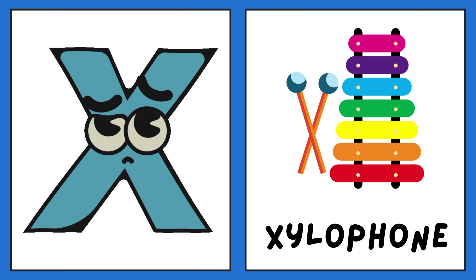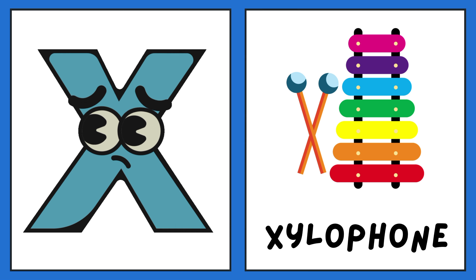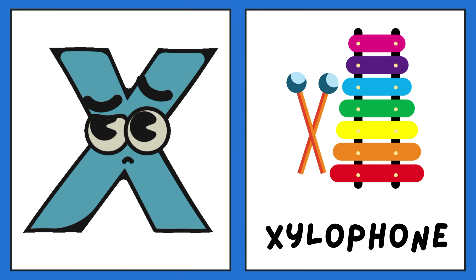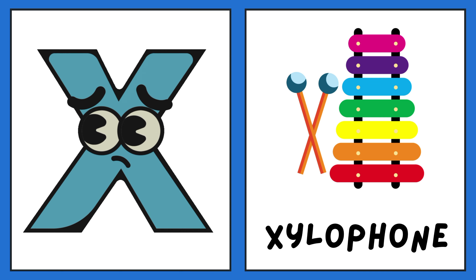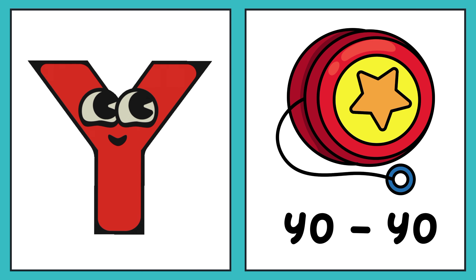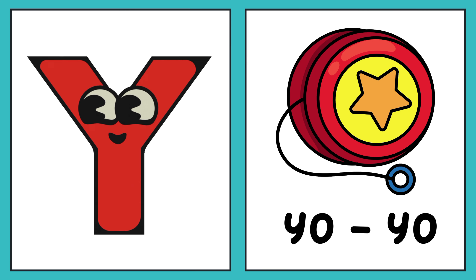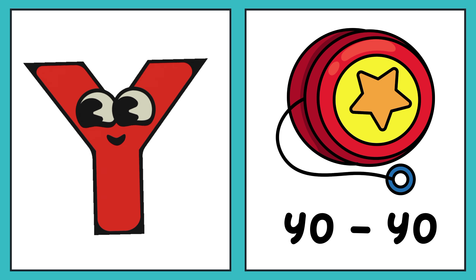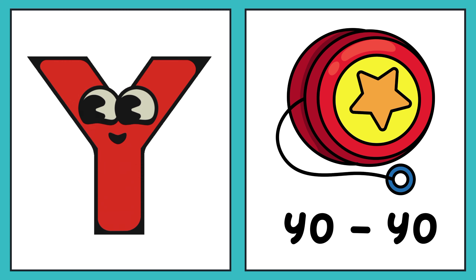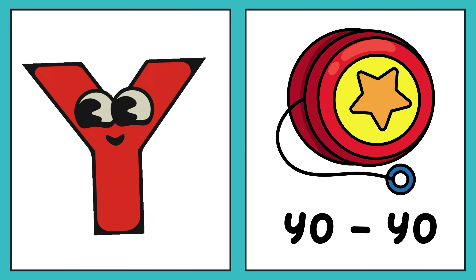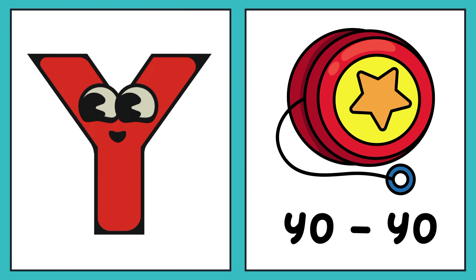X is for zylobom. Z, zylobom. X, zylobom. X, zylobom. Y is for yo. Yo. Y, yo. Y, yo. Y, yo. Y, yo.